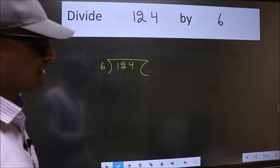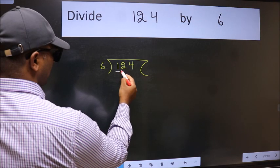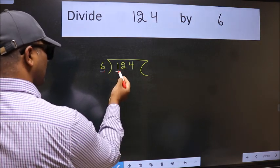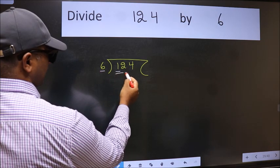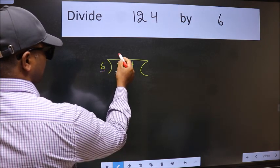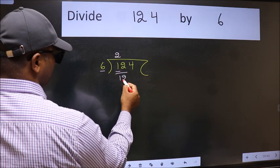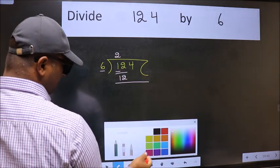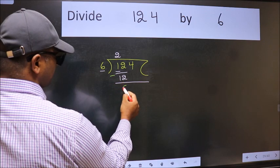Next, here we have 1 and here 6. 1 is smaller than 6. So take 2 numbers, 12. When do we get 12 in 6 table? 6 times 2 is 12. Now we should subtract. We get 0.